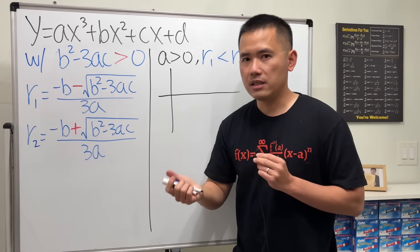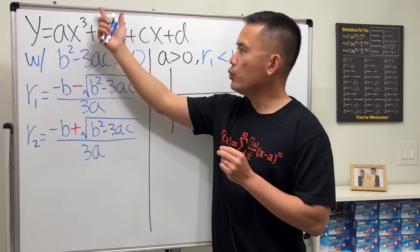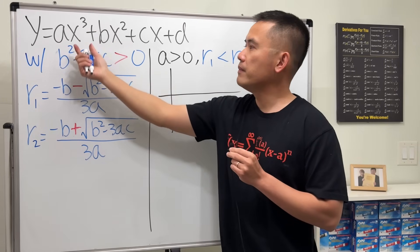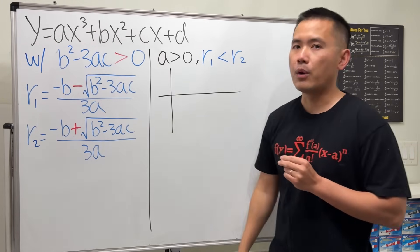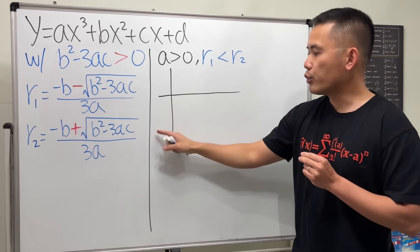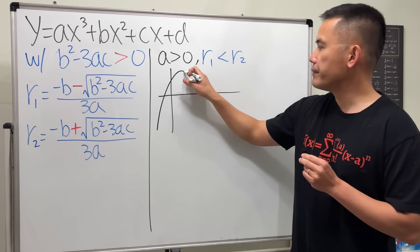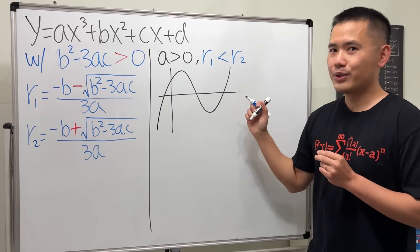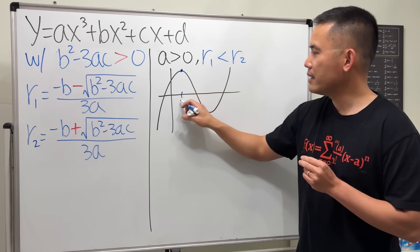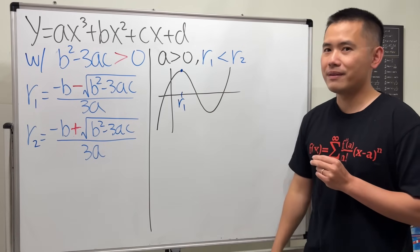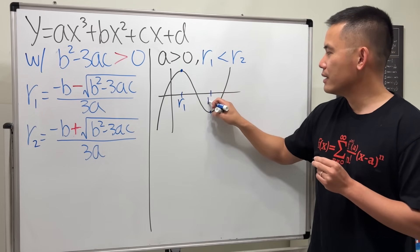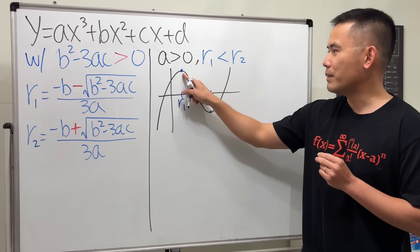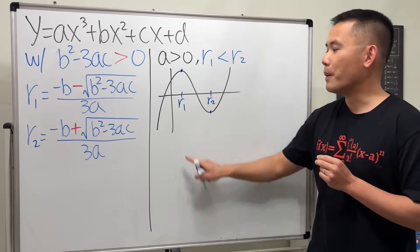Let's look at the graph for a cubic with a positive. Because a is positive, as x approaches negative infinity the cubic goes to negative infinity — so the graph starts down low, then goes up, down, up. Since r1 is smaller than r2, this point happens at x equals r1 — that's a local max — and this point at x equals r2 is a local min.